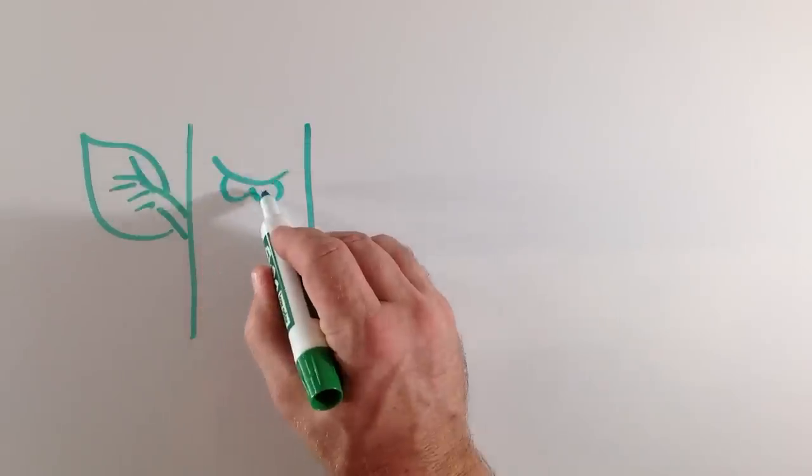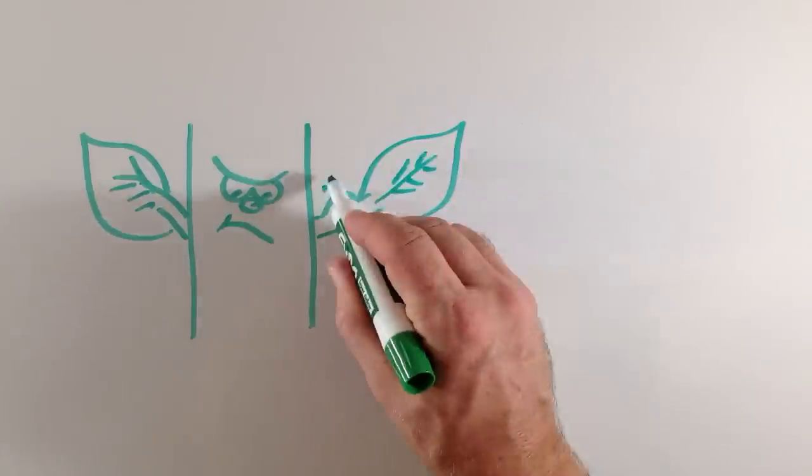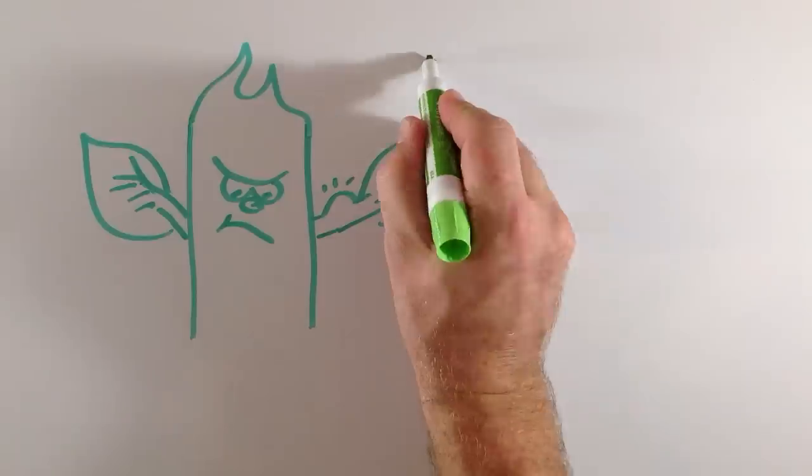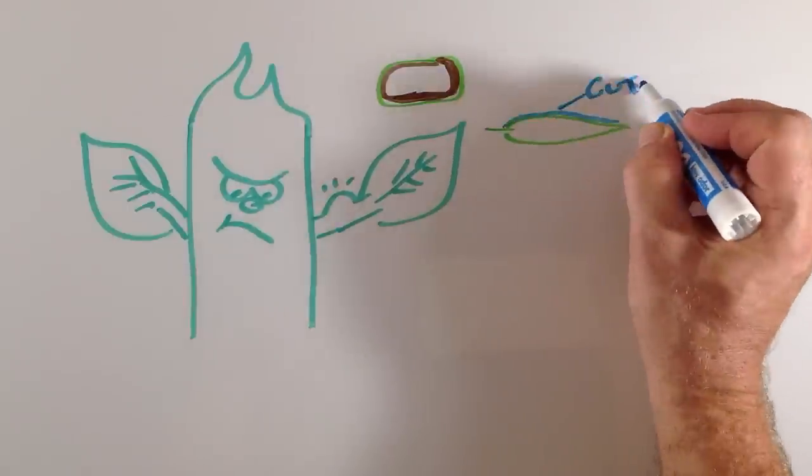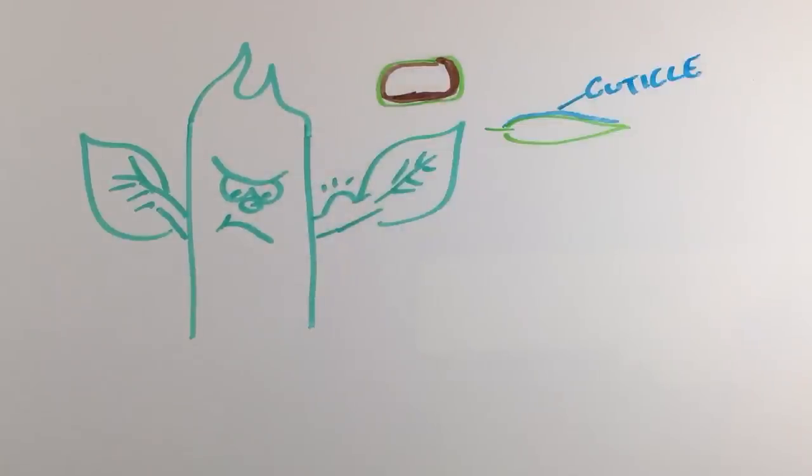Mechanical defenses basically involve making the plant tougher, harder to eat. This can be done by thickening structures or making them stronger due to depositing reinforcements such as lignin inside of cell walls. Other plants can thicken an outer waxy layer called the cuticle that makes it difficult for smaller herbivores to bite through and get into the leaf.